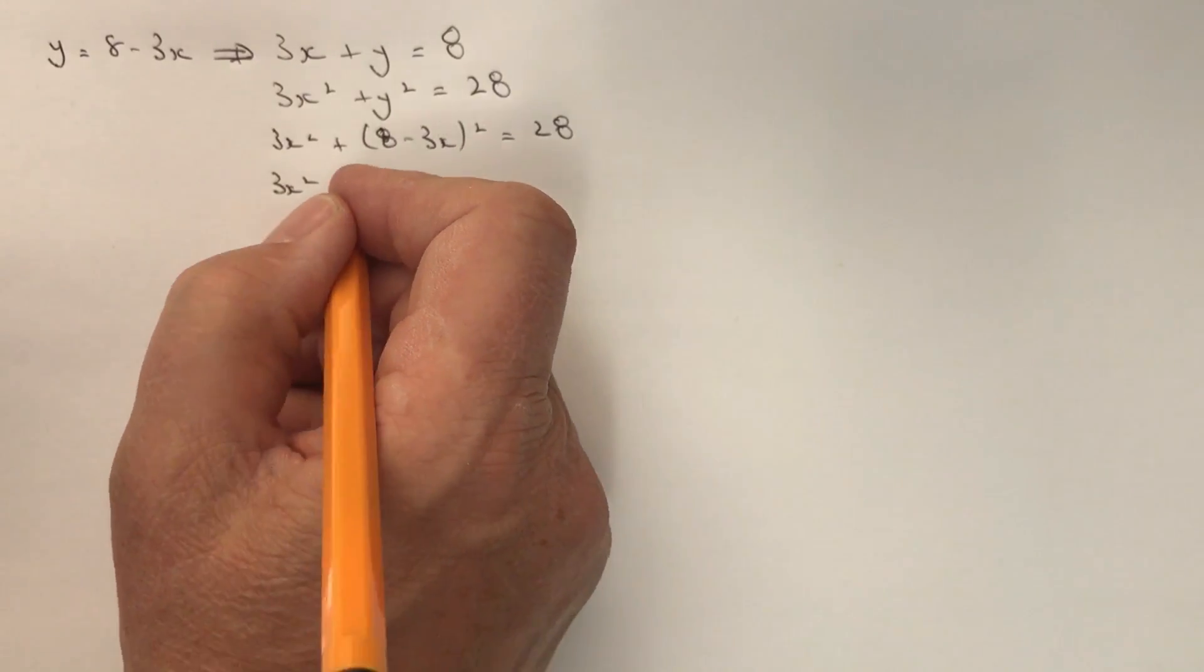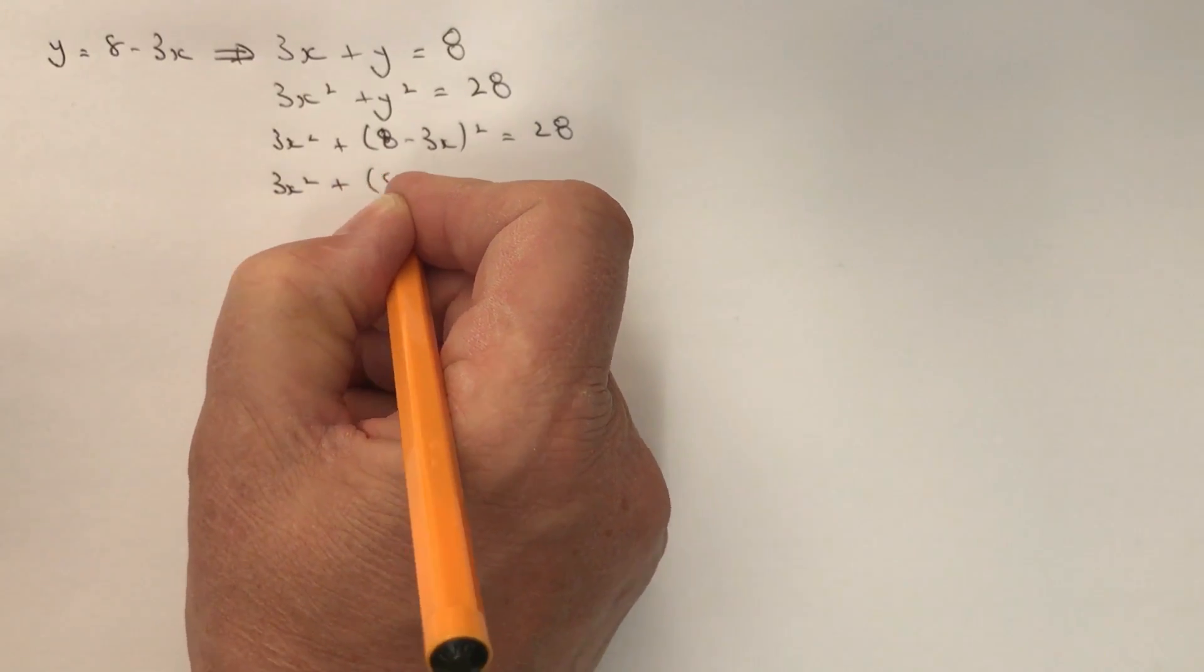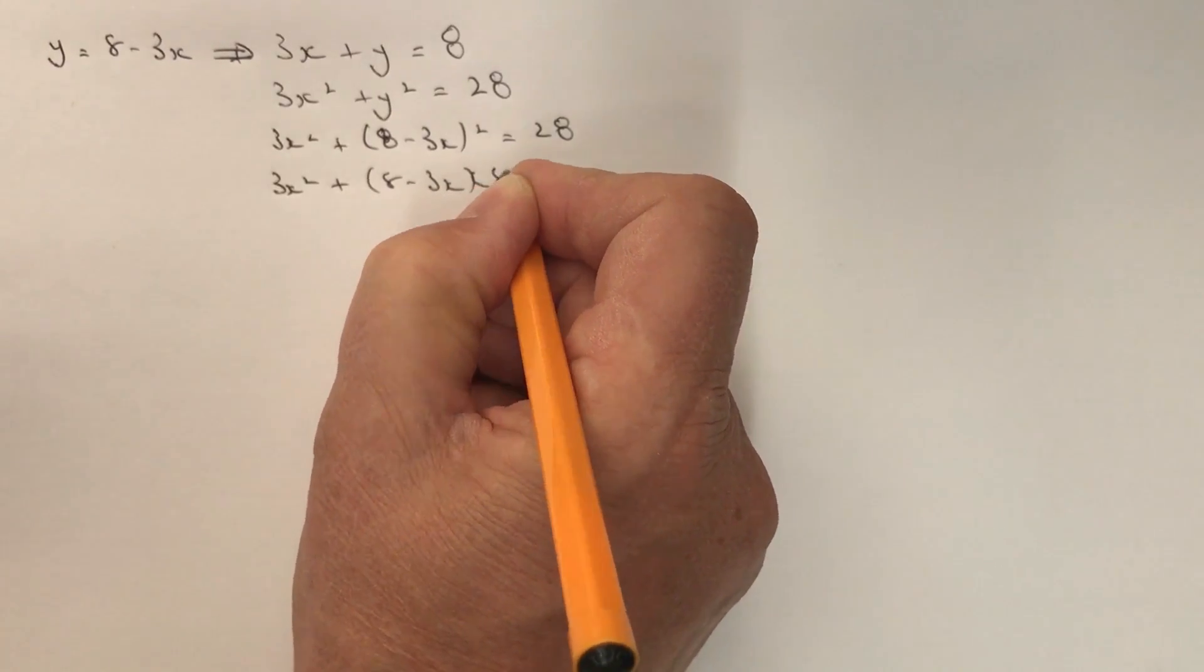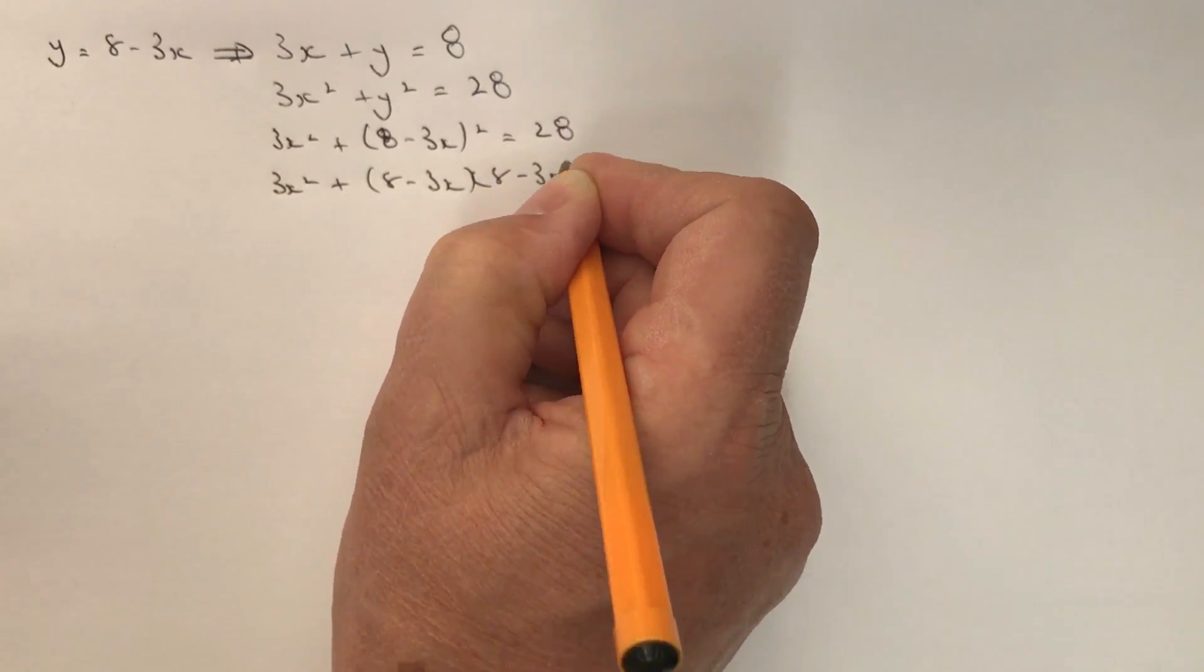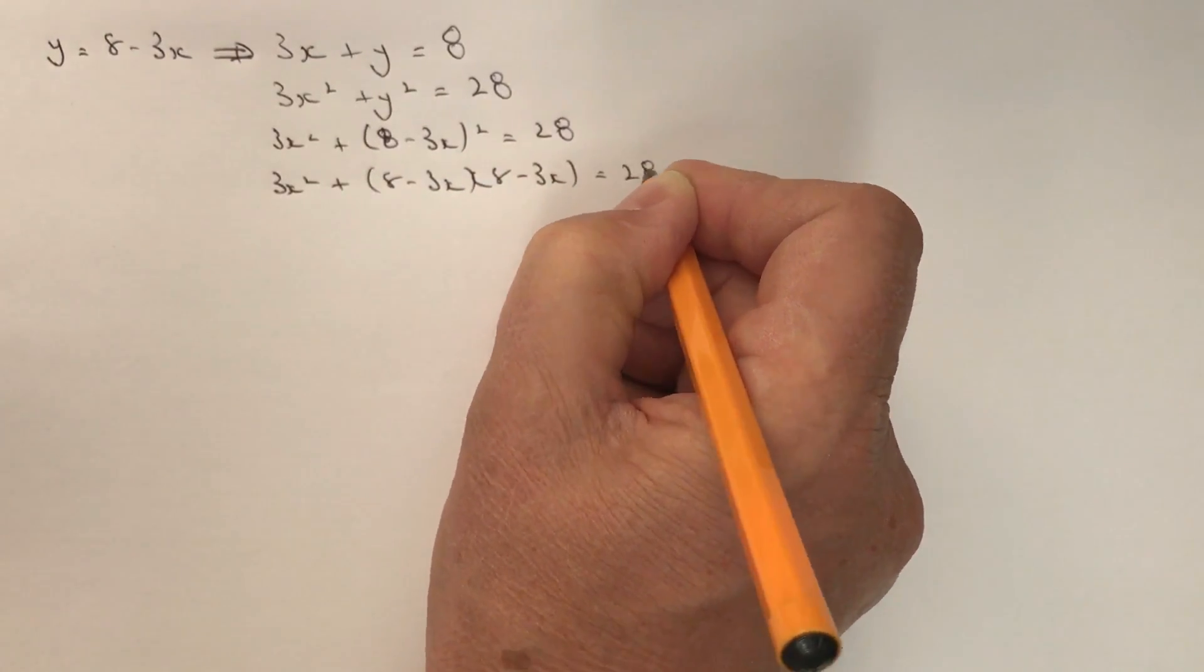Then really it's just a case of expanding this particular equation and solving it for x. So if I take this equation out here, I'm going to get 8 minus 3x times 8 minus 3x, and that equals 28.